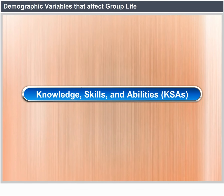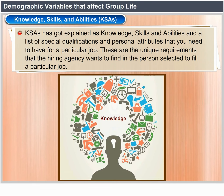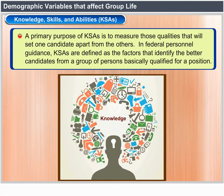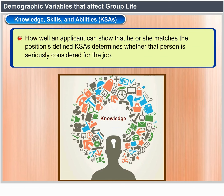Knowledge, Skills and Abilities (KSAs) are a list of special qualifications and personal attributes that you need for a particular job. These are the unique requirements that the hiring agency wants to find in the person selected to fill a particular job. A primary purpose of KSAs is to measure those qualities that will set one candidate apart from the others. In federal personnel guidance, KSAs are defined as the factors that identify the better candidates from a group of persons basically qualified for a position.